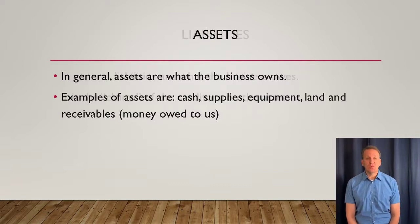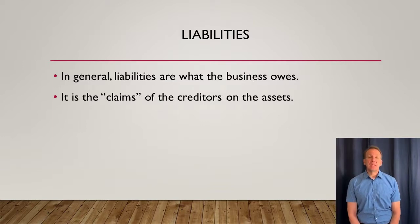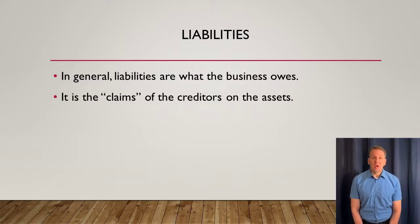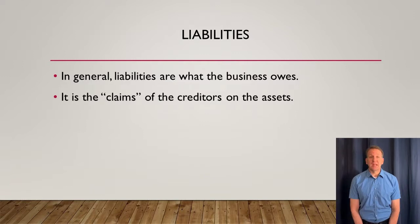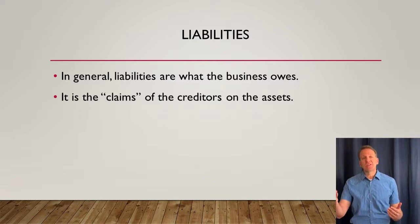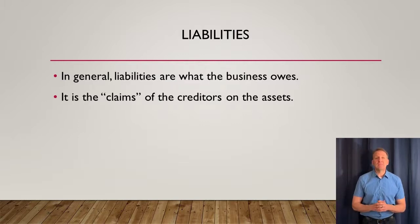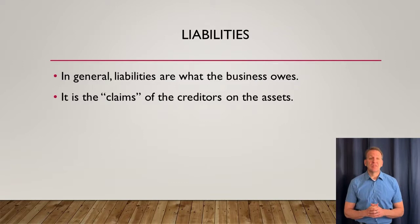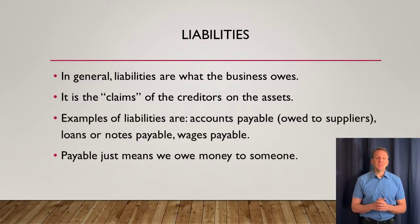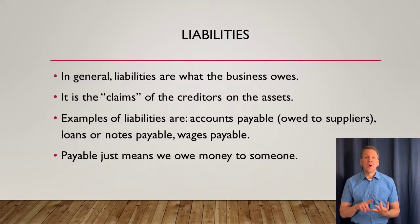On the other side of the accounting equation we have liabilities, because assets equal liabilities plus equity. Liabilities is what the business owes to somebody else or some other business — we have a debt, we owe money to somebody. It's the claims that creditors have on our assets. So liabilities show how we're getting these assets — we owe somebody money for those assets. Some examples of liabilities are accounts payable, loans or notes payable, and wages payable.